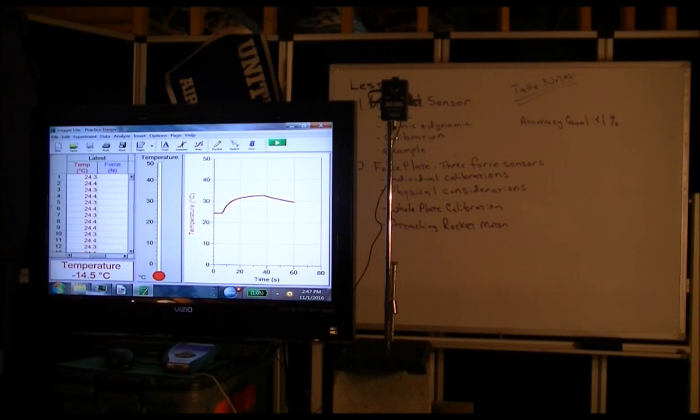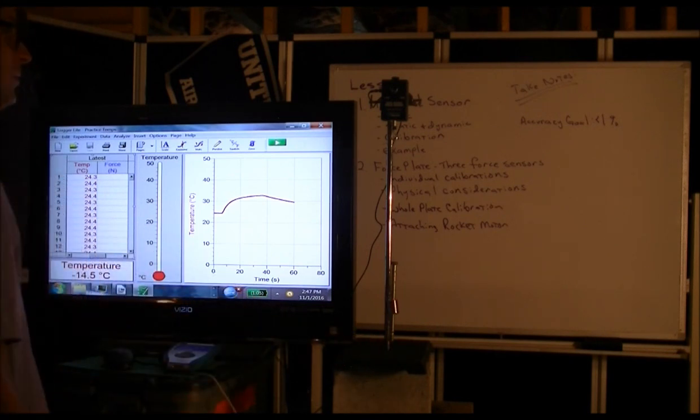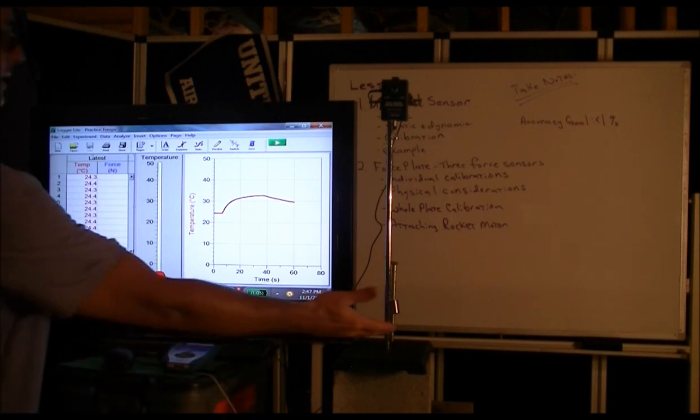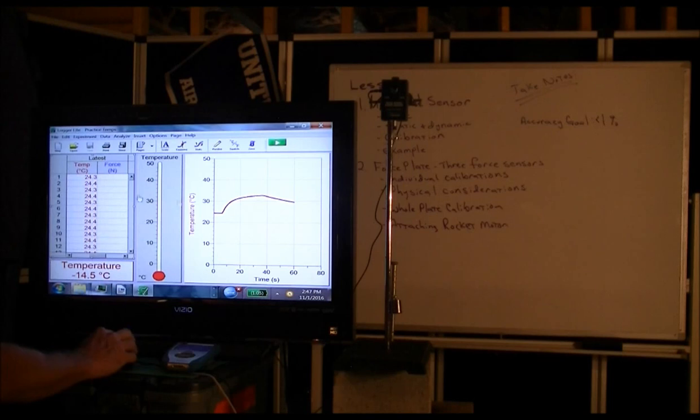Okay, so now I have the dual range force sensor attached and I've set it up here so it's in clear view. I have a weight hanging from it, but the logger light doesn't see it yet. So let's try the same thing we tried before and let's go ahead and close it.